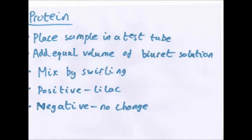Protein: place a sample in a test tube, add an equal volume of Biuret solution — that's made of sodium hydroxide and copper sulphate. Mix by swirling. If there is protein present, you'll get a lilac colour. Negative: no change.